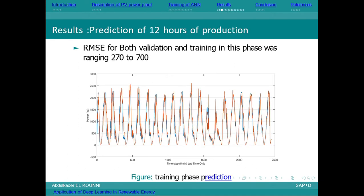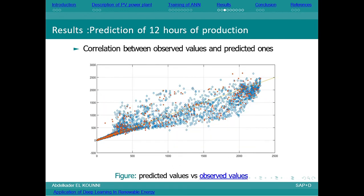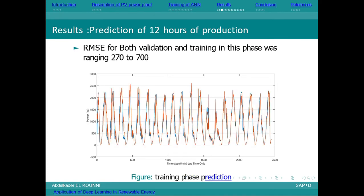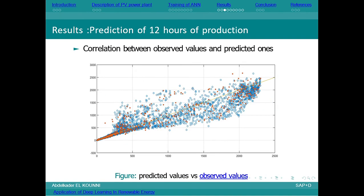In the first stages of training the model, we tried to predict 12 hours of production. We trained the model with 70% of the data set. The RMSE was ranging from 270 to 700, and the correlation between the predicted and output values wasn't a good correlation—it was spread.